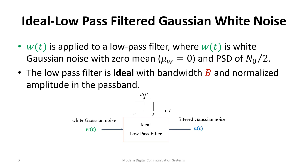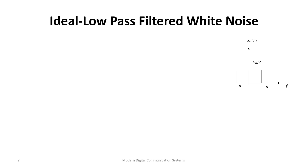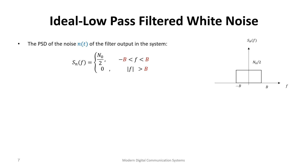Now let's take this white noise and make it more realistic by passing it through an ideal low-pass filter. The noise at the input has a mean of zero and PSD of N₀/2. The ideal low-pass filter has bandwidth B and normalized amplitude of one (no gain). We call the input w and the output n(t). The output PSD will be N₀/2 times the magnitude squared of H(f).